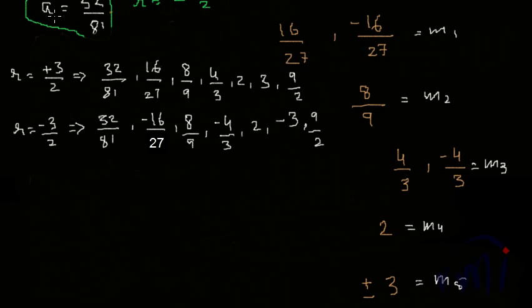We are getting two sets of geometric means: the first where all the geometric means are positive, and the second where the alternate geometric means are negative. This is the desired result.